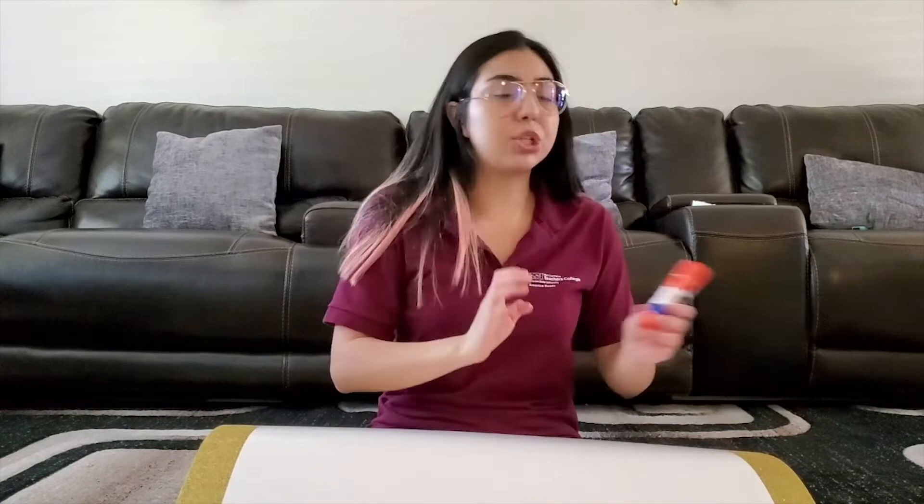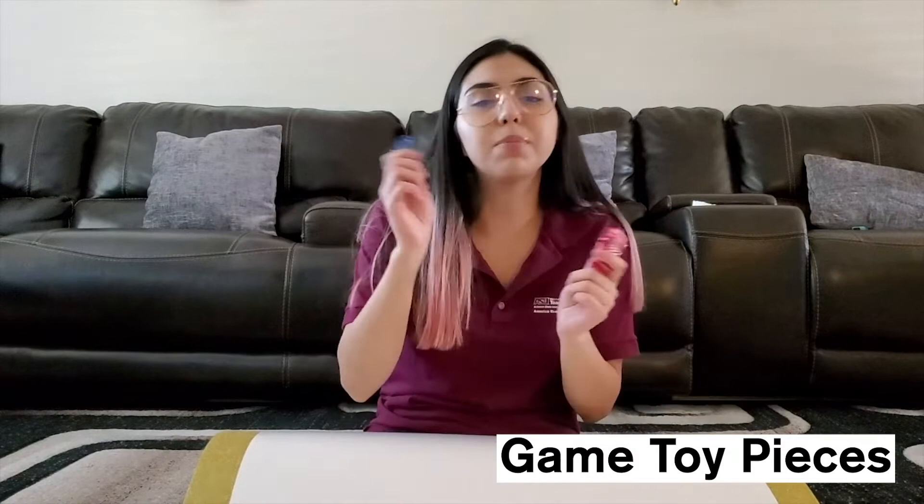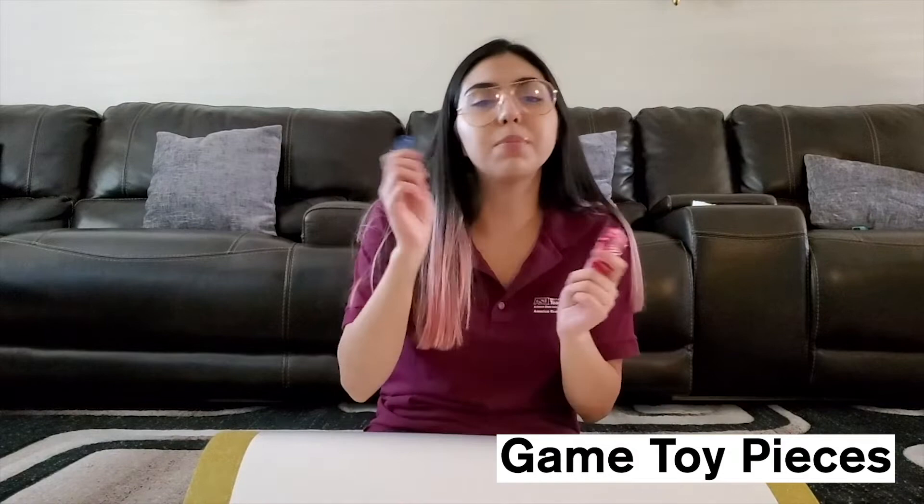And then the other material you will need is a glue stick, some rolling dices, either two or one is fine. And then we're going to need some game toy pieces, so that way you can choose who's going to be the red card, who's going to be the blue card. And then we're going to need some post-it notes. I chose some colorful ones to make it look more fun for the game board.